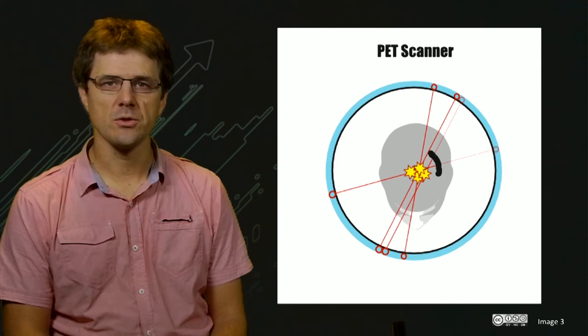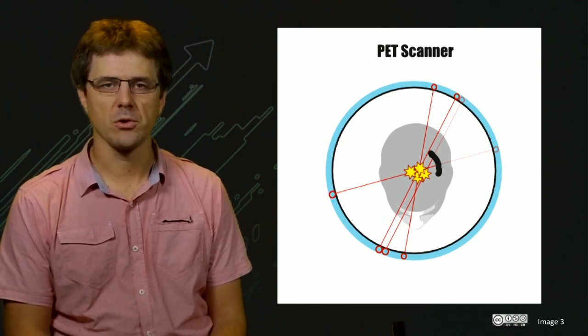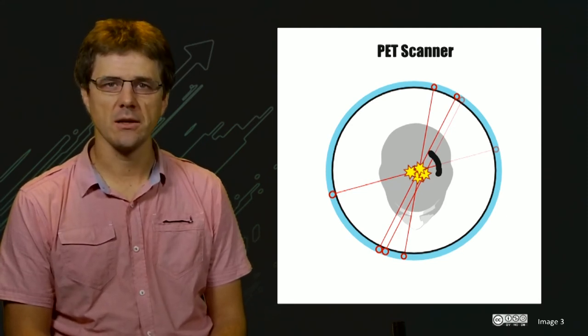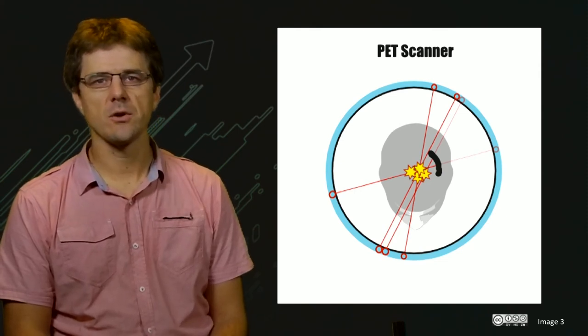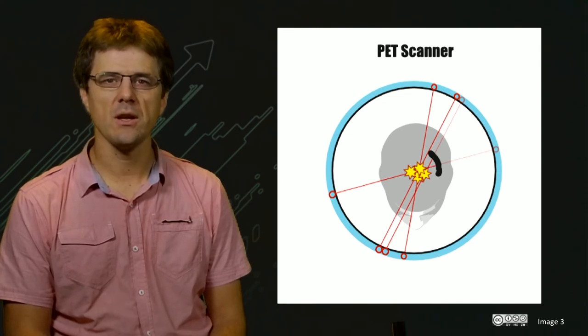In this figure, we have introduced an attenuation. This results in the blocking of gamma rays approximately 50% of the time. When this happens, a coincidence event is only detected half the time for this particular point. This loss of coincidence events in a larger subject or sample range between 50 and 90%.